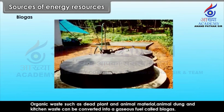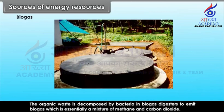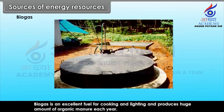Biogas. Organic waste such as dead plant and animal material, animal dung and kitchen waste can be converted into a gaseous fuel called biogas. The organic waste is decomposed by bacteria in biogas digesters to emit biogas, which is essentially a mixture of methane and carbon dioxide. Biogas is an excellent fuel for cooking and lighting and produces a huge amount of organic manure each year.